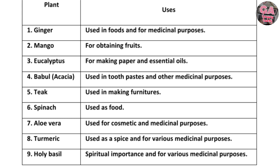Now the uses of plants: First, ginger — used in food and for medical purposes. Second, mango — for obtaining fruits. Third, eucalyptus — for making paper and essential oils. Fourth, babul or acacia — used in toothpaste and other medicinal purposes. Fifth, teak — used in making furniture. Sixth, spinach — used as food. Seventh, aloe vera — used for cosmetics and medical purposes.